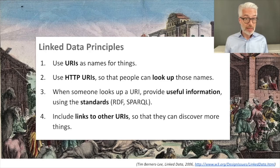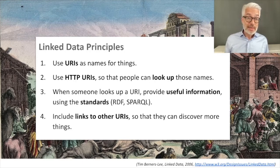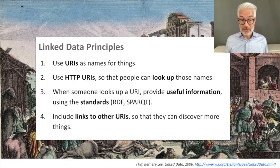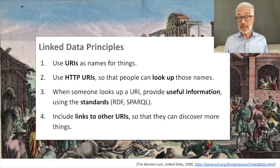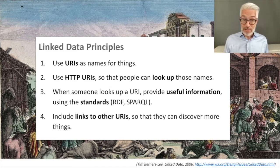To sum up, there are four linked data principles. Number one: if we want to identify things on the web, we use URIs — Uniform Resource Identifiers. All of our data fields that previously resided in a database will become accessible with fine-grained access; everything gets a URI. Furthermore, these URIs, as long as they are publicly available, can be accessed via HTTP, so that people can look up the names you have defined.